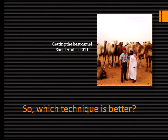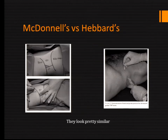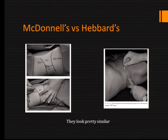Which one is better? Here is the comparison between McDonnell's and Herbert's original publications. You can see what Rafi or McDonnell did to select the triangle of Petit, then the introduction of the needle. If you compare the positions of where eventually the needle ends, they seem pretty similar. So let's go a little bit into the anatomy to see if we can come up with some answers.